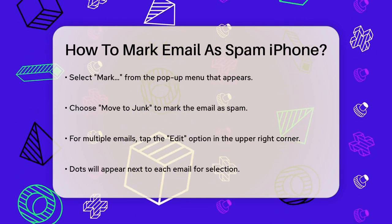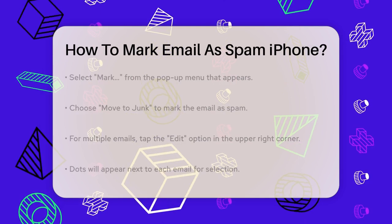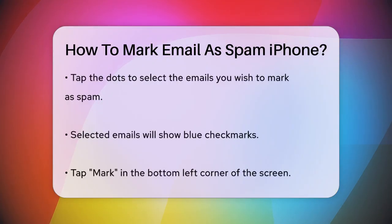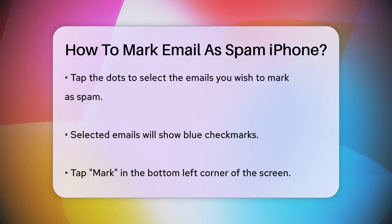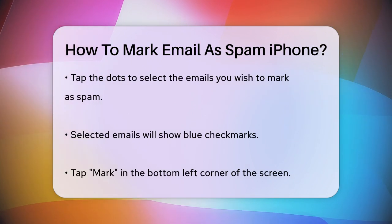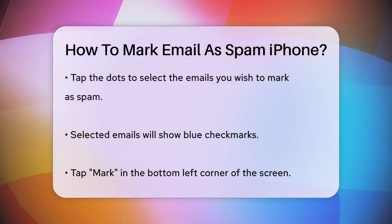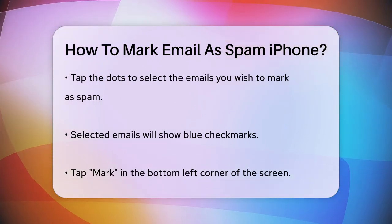Tap the dots to select the emails you want to mark as spam, which will change the empty dots to blue checkmarks. Then tap Mark in the bottom left corner of the screen and select Move to Junk.